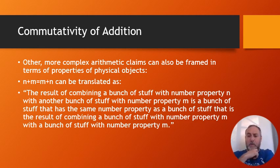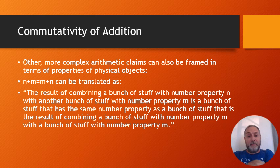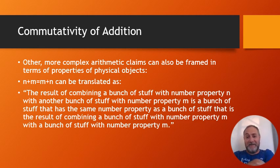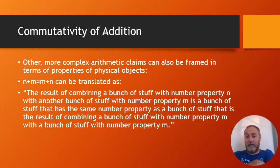Obviously arithmetic gets more and more complex, and the question is can all such statements be translated in terms of properties, or do we need numbers? She gives examples — n plus m equals n plus m could be translated as: the result of combining a bunch of stuff with number property n with another bunch with number property m is a bunch with the same number property as the result of combining a bunch with property m with a bunch with property n. Kind of similar to Field's approach, where he wanted to reformulate science without using numbers — you could do it, it's just a real pain. You end up with very long complicated sentences, but it'll work.